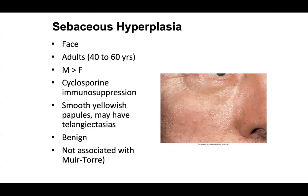Sebaceous hyperplasia is very common on the face of adults. Cyclosporine immunosuppression is associated with sebaceous hyperplasia. It's smooth yellowish papules that can have telangiectasias and look like a basal cell carcinoma. However, these are often more symmetric, more yellow, don't have as many telangiectasias, don't ulcerate, and are typically not very big. They are benign, though anything benign could give rise to malignant features. We'll talk about different sebaceous tumors and their malignant counterparts.